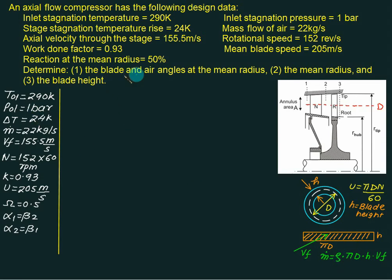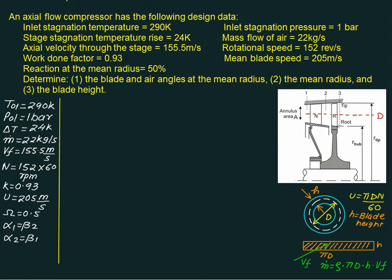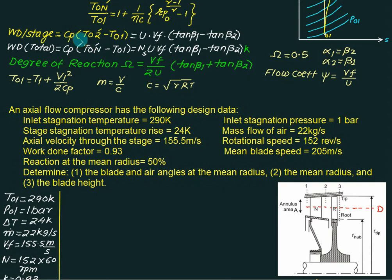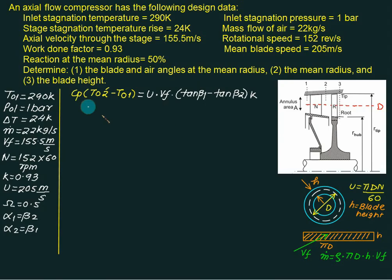To calculate the blade angles at inlet and outlet, we use two equations. The first is the work done for one stage: Cp × (T02' − T01) = k × U × Vf × (tan β1 − tan β2). The second equation is for degree of reaction: R = (Vf / 2U) × (tan β1 + tan β2). Using these two equations, we can find β1 and β2. Substituting values, we get: tan β1 − tan β2 = 0.814 … (equation 1).